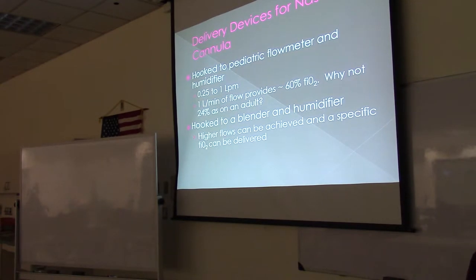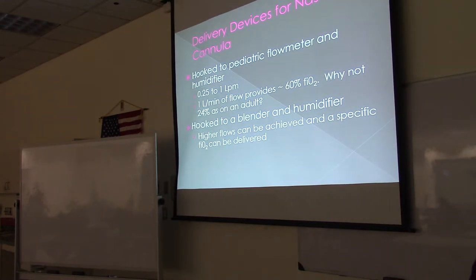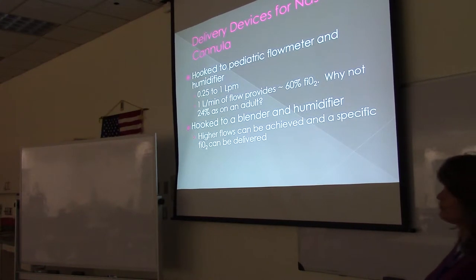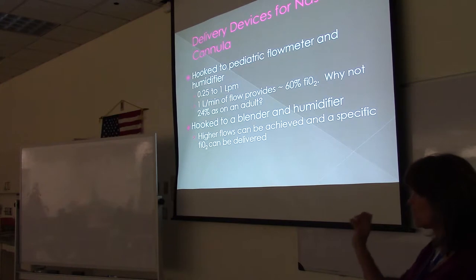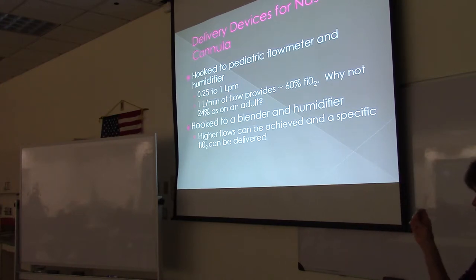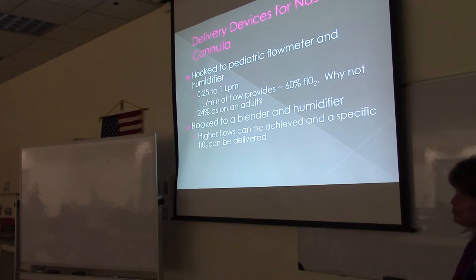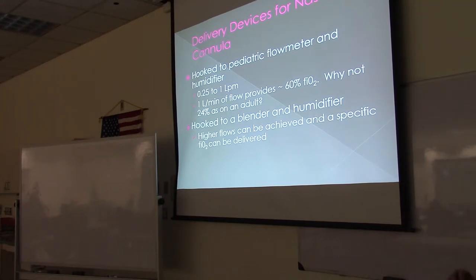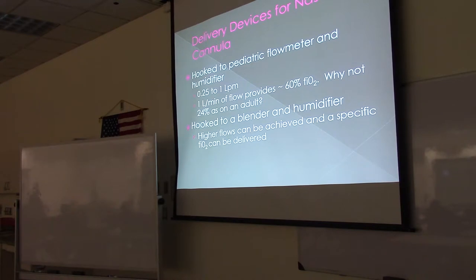The next option — hooked to a blender and humidifier — you can cross that one off. Vapotherm is taking over for babies on nasal cannula with a humidifier. You use a low FiO2, maybe 22–23%, but crank up the flow to deliver a little extra pressure and wash out anatomic dead space. That's now done with units like Vapotherm instead of just a blender, humidifier, and cannula the old-fashioned way.